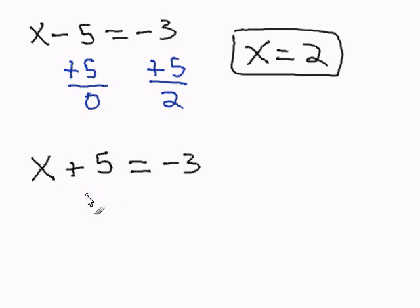Then this plus 5, I must get rid of that, so I'm going to subtract 5, which gets me 0. And I have to balance the equation by subtracting 5 on the other side of the equal sign. Negative 3 minus 5 is negative 8.